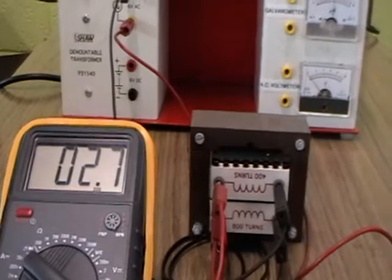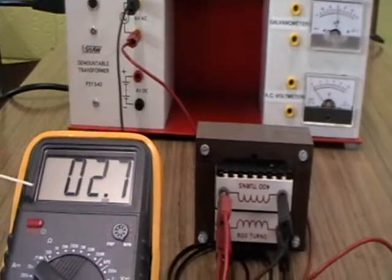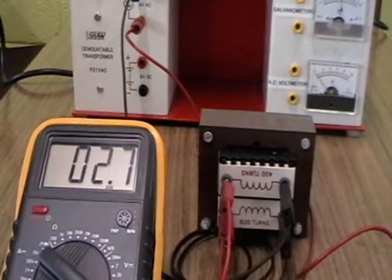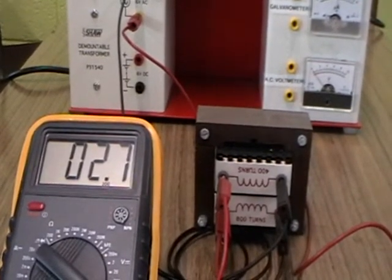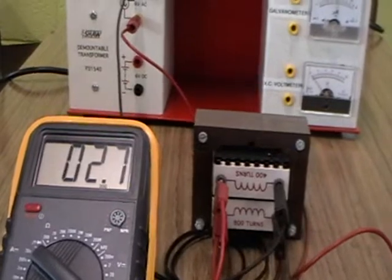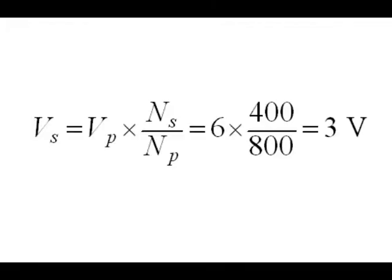But in practice the EMF in the secondary coil may be less than 3 volts, for example 2.7 volts. This is due to heat losses in the laminated soft iron core. In theory, VS equals VP times NS over NP equals 6 times 400 over 800 equals 3 volts.